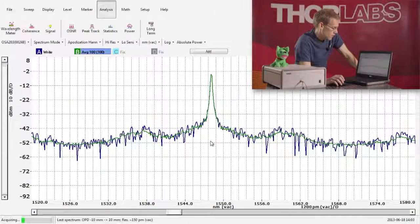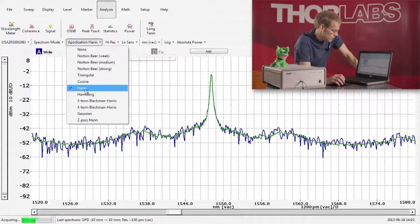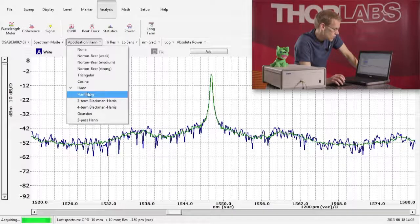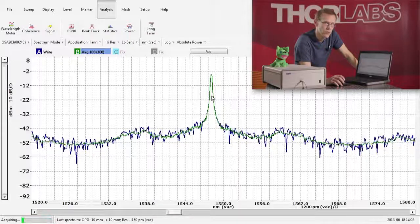The settings for measurements on a narrowband source. For measuring on a narrowband source, I would recommend using Hann apodization. This is one of the strongest types of apodization and will remove most of the artifacts that could otherwise appear from the Fourier transform.